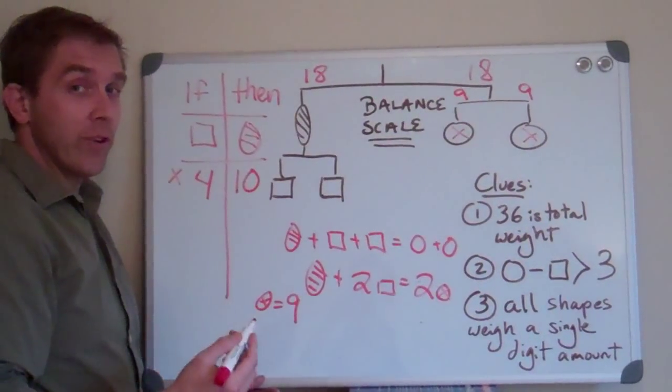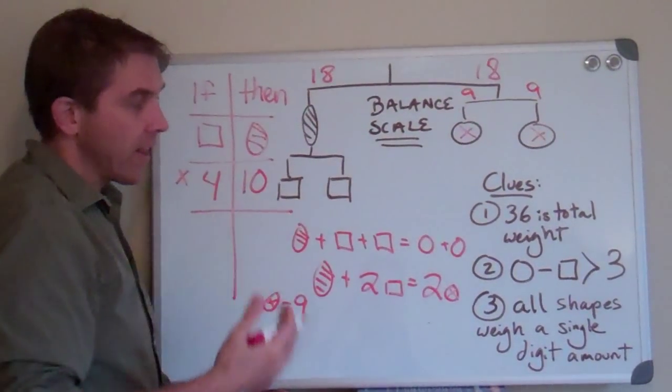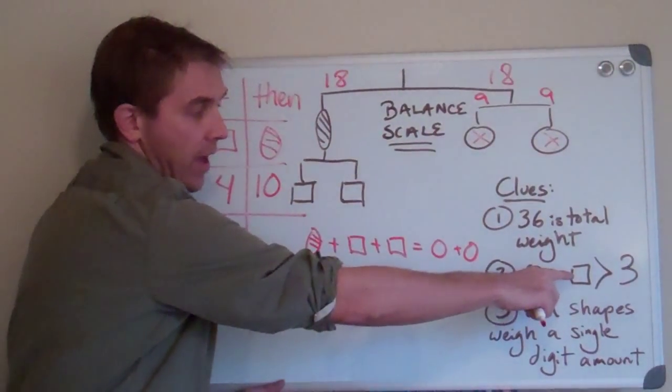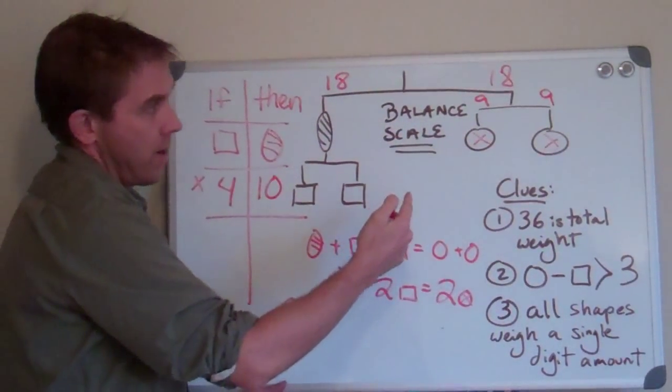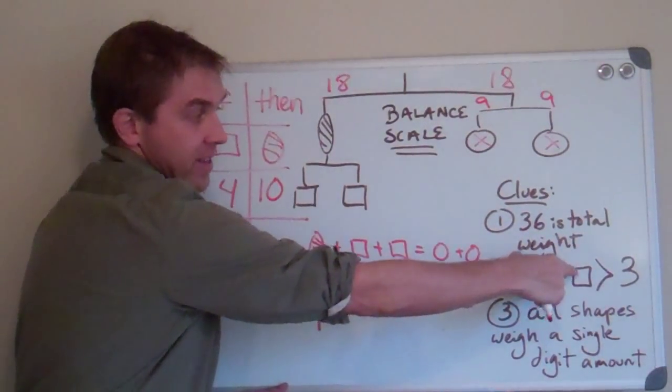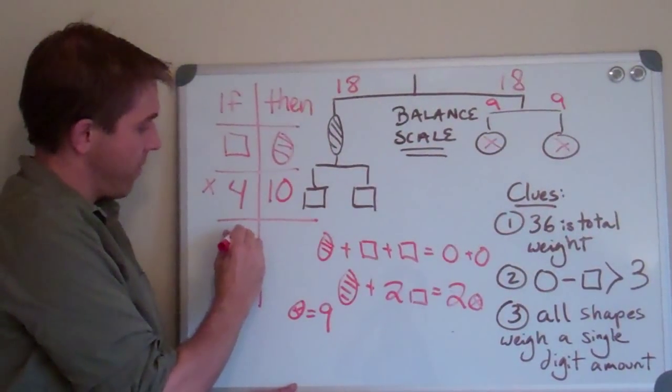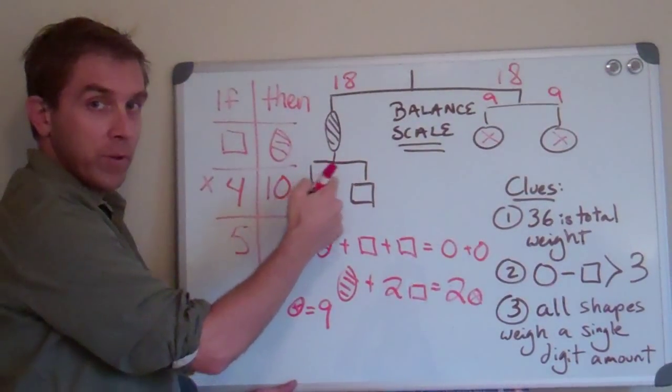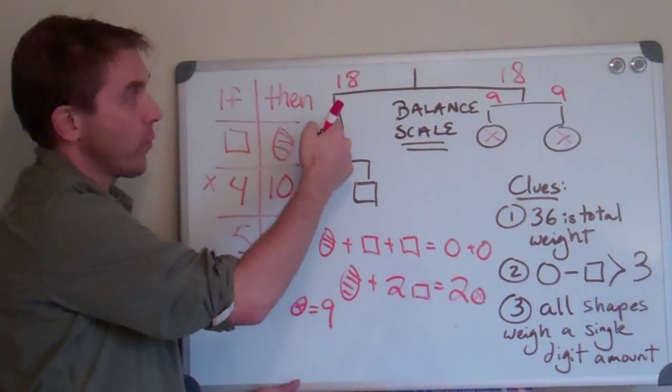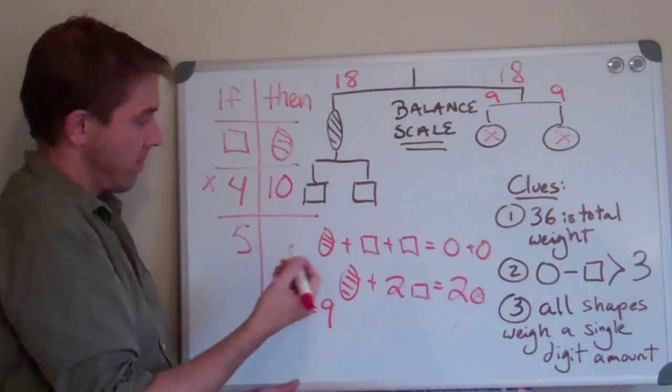But at least we're keeping track of our work, right? Anything you can think of now that would still satisfy clue number two. Nine minus something is greater than three. Let's try five. The square is five. Five plus five is ten. Ten plus what is eighteen? Eight.